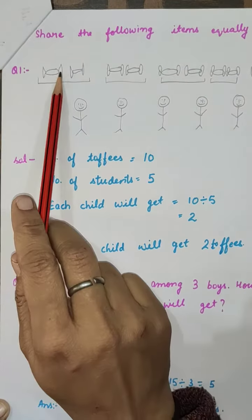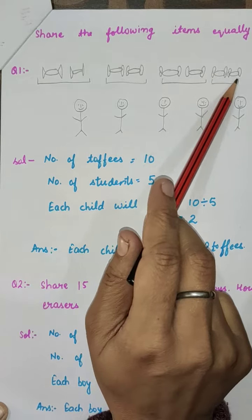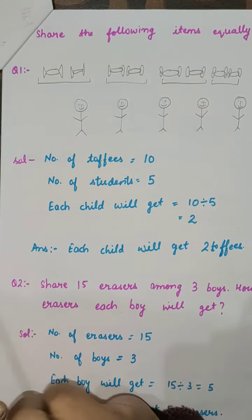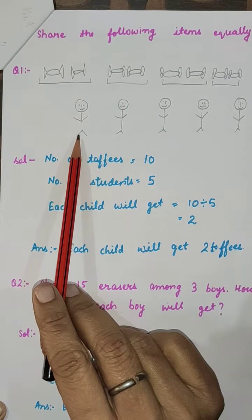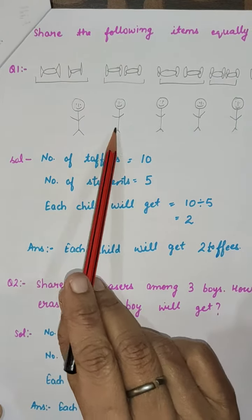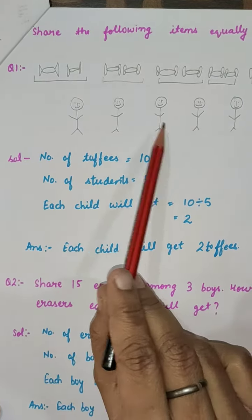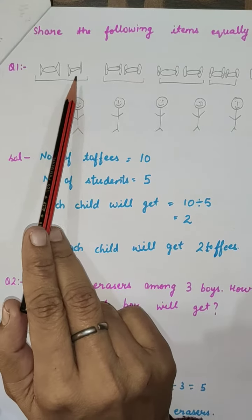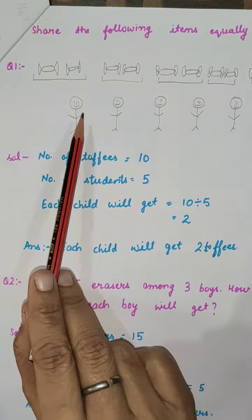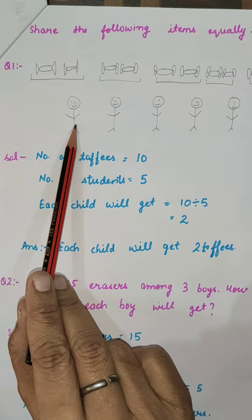You can see here are toffees: one, two, three, four, five, six, seven, eight, nine, ten. Total ten toffees are there. And here are total five children, or you can say students: one, two, three, four, five. Total five students and ten toffees. Now you have to share these toffees to these students equally.